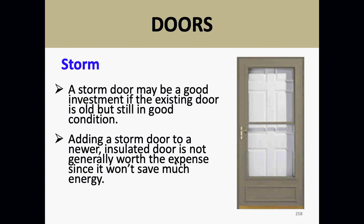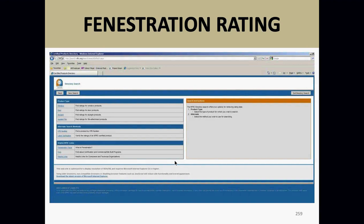For ratings on doors and windows, you can look them up online at the NFRC — that's the organization that rates all these products. Their website is NFRC.org. You can look up R-values, U-values, and solar gain values for all rated products going back to the 80s. This is where the ACA tables come from.